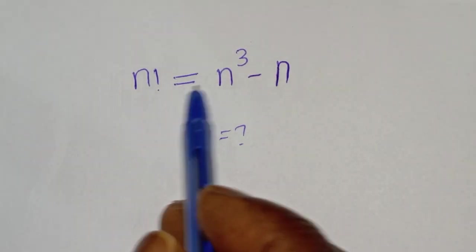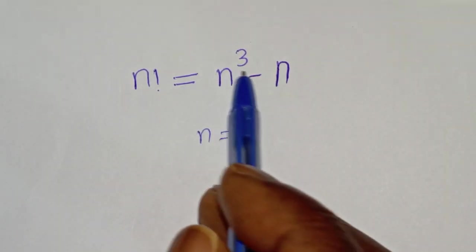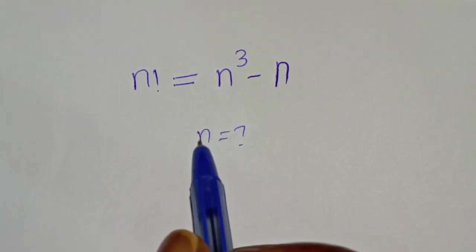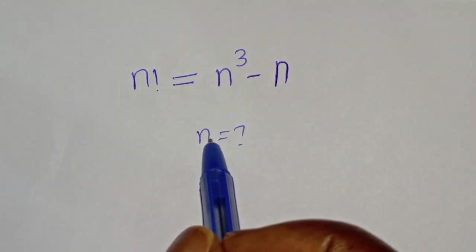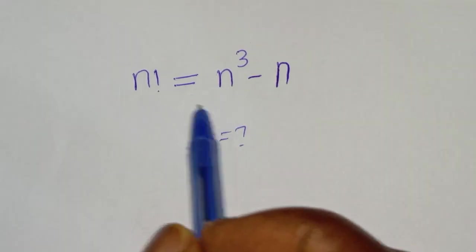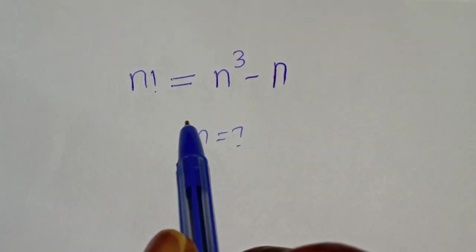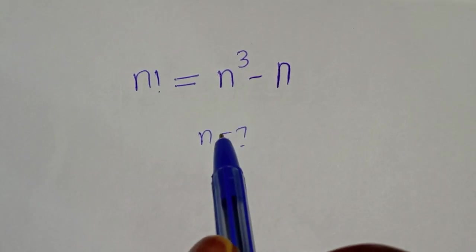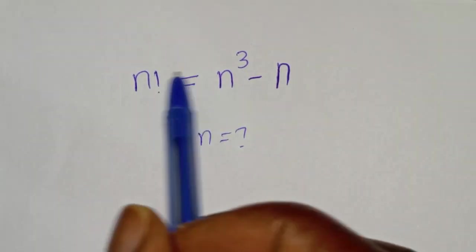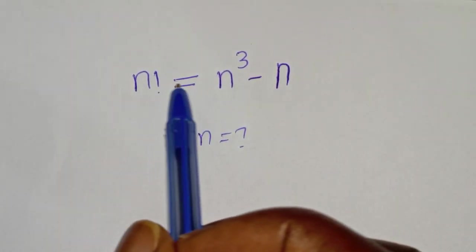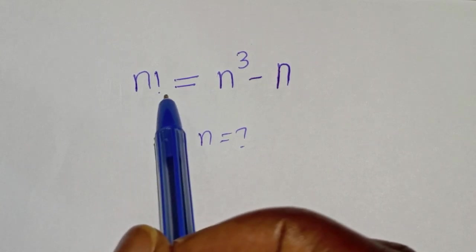n factorial is equal to n raised to power 3 minus n factorial. What is the value of n? Hi everyone, welcome to my class. In this class, I want to find the value of n from this given nice equation, but before we proceed,